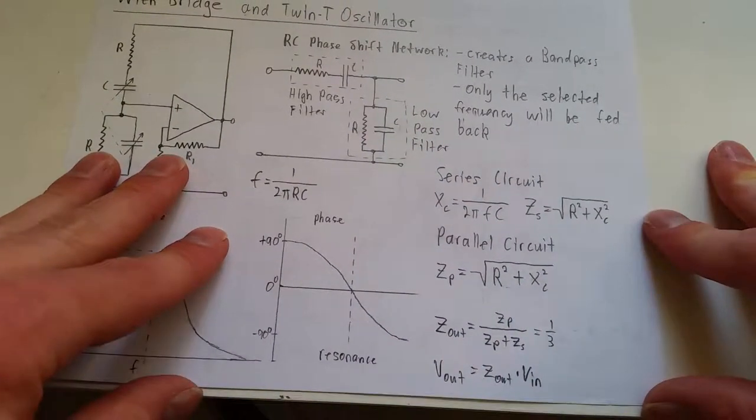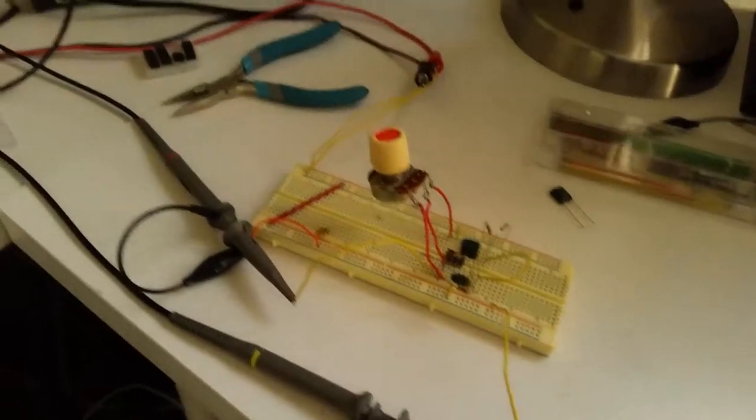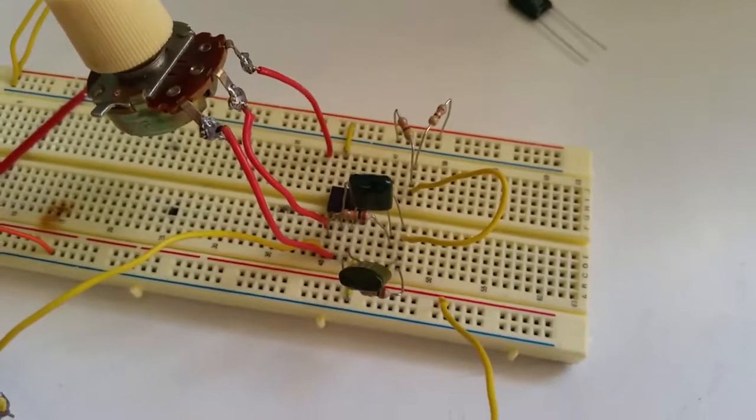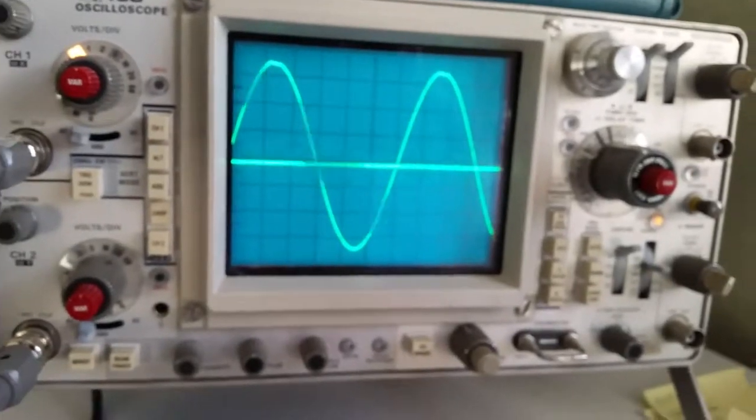And, I have a circuit. I have the Wien Bridge oscillator set up right here. Nothing too special. I got a potentiometer here to control the gain. To help prevent clipping the sine wave. Even though it's pretty hard to set up here. Let me actually, yeah, get that off there. So, that's, it's oscillating at probably 160 some odd hertz right now.